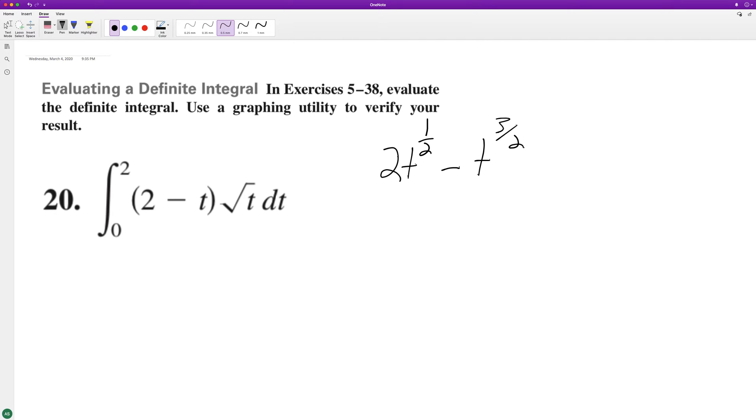And when we integrate this, we end up with 4 thirds t raised to the 3 halves minus 2 fifths t raised to the 5 halves. And we're going from 0 to 2.